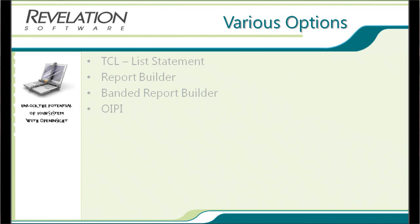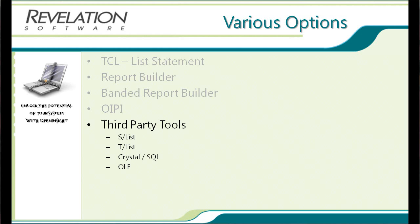That's then extended through the Banded Report Builder, which enables you to band data in different ways. We've also got OIPI, the advanced print engine within the toolset. These are reports created in code — not end-user generated reports, these are definitely for developers. You need to create quite a bit of code, but you can produce very nicely formatted reports. We'll have a look at one I wrote for my contact manager in a few moments. There are also a number of third-party tools — S-List from Spezzatura is one of the leading ones, and there's also T-List.